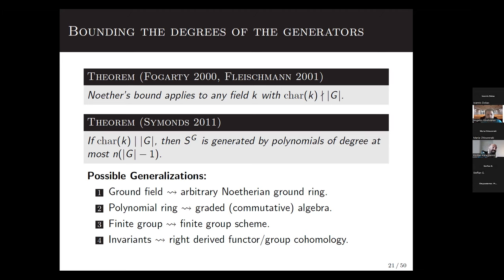The final settlement was given by Peter Symonds in 2011 in a celebrated paper in the Annals. He proved that in the modular case, invariants are generated by polynomials whose degrees are bounded by the number of variables times the order of the group. Noether's bound was known to fail in that context, and this bound — conjectured earlier — was finally proved by Symonds.